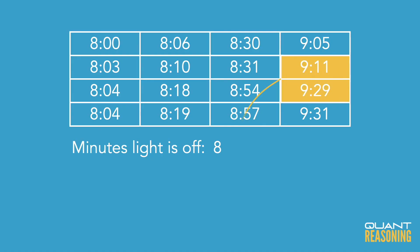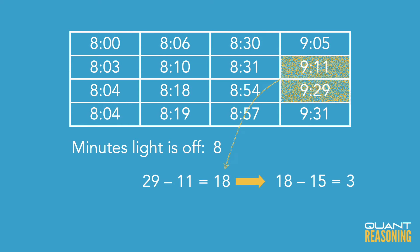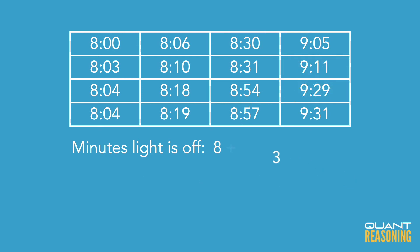There's another window where the light is off between 9:11 and 9:29 — a gap of 18 minutes — so the light would be off for 3 of those minutes. Combined with the 8 minutes from the previous window, we're already at 11 minutes off in total.